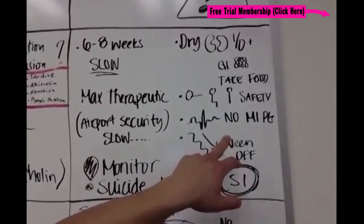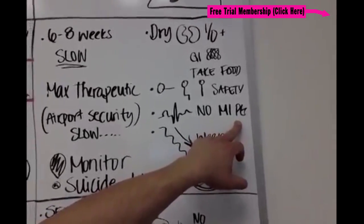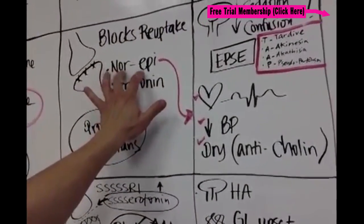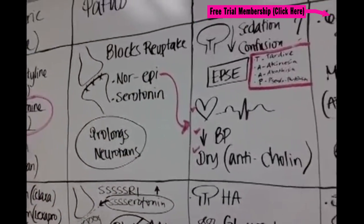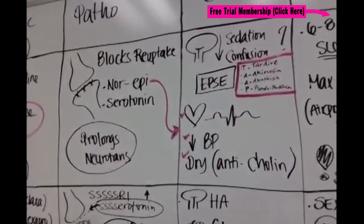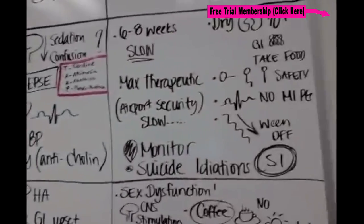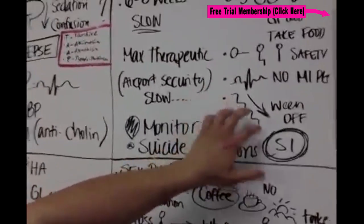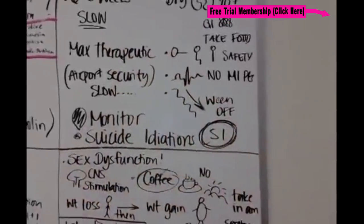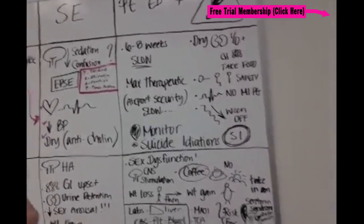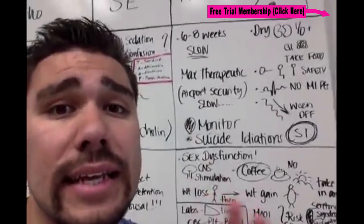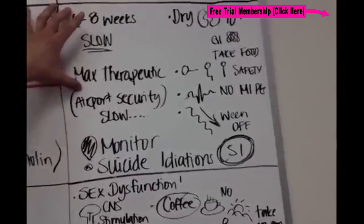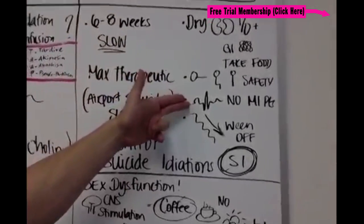No cardiac medications and no MI patients — patients who've had heart attacks cannot be on TCAs. Why? Because we're limiting norepinephrine, which is the catecholamine that helps the heart pump. Also, everything needs to be weaned off — don't abruptly stop this drug. The biggest takeaways: monitor for suicide ideations, slow onset, and no heart attack patients because of the norepinephrine effect.